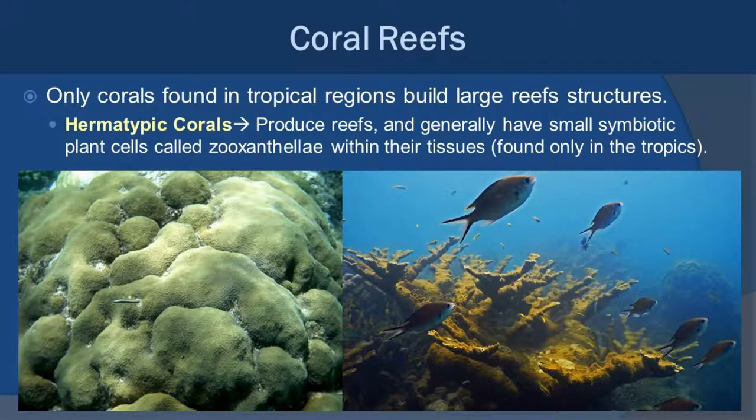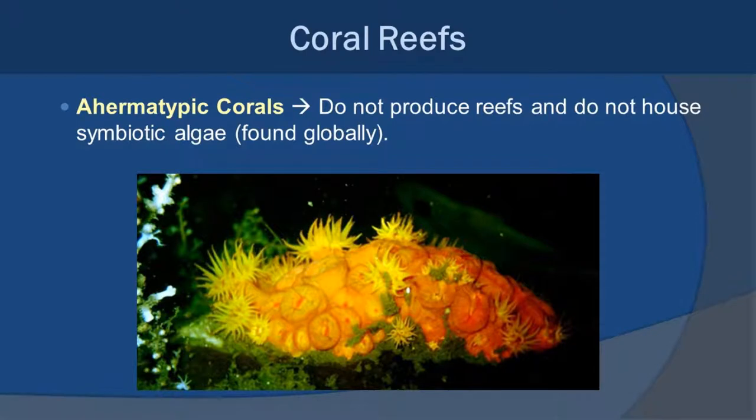Corals found in tropical regions that build large coral reef structures are called hermatypic corals. They produce these large reefs in relationships with small symbiotic plant cells called zooxanthellae, found within the tissue of the coral. This mutualistic relationship is only seen in the tropics. Corals outside the tropical zone, or those in the tropics that do not build reefs, are called ahermatypic corals — they do not house that symbiotic algae. This is a picture of a coral called Tabastria, found under pilings, docks, or ledges without sunlight exposure, feeding primarily on zooplankton.